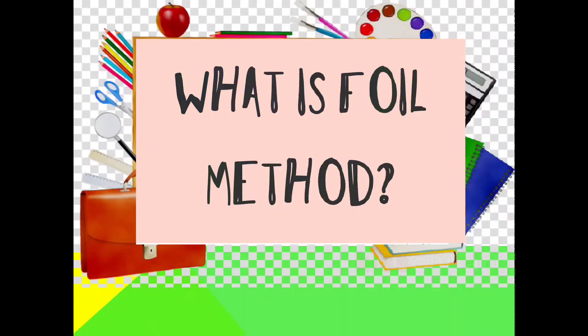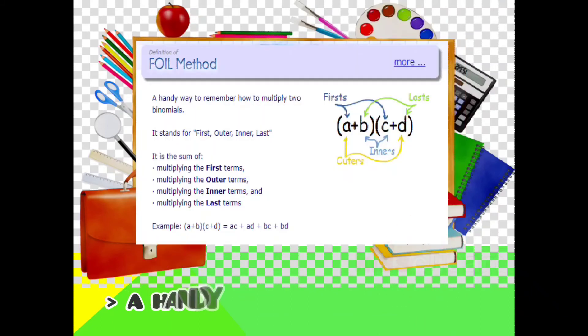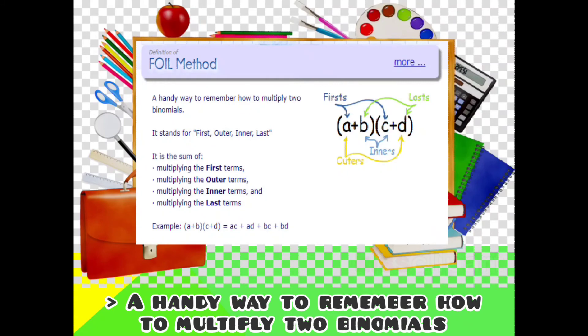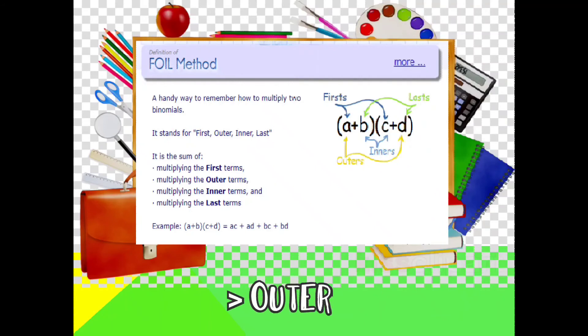Para matulungan kayo makapag-solve ng mas madali, we can use FOIL method. What is FOIL method? It is a handy way to remember how to multiply two binomials. FOIL stands for first, outer, inner, and last. It is the sum of multiplying first term, multiplying outer terms, multiplying inner terms, and multiplying the last term.